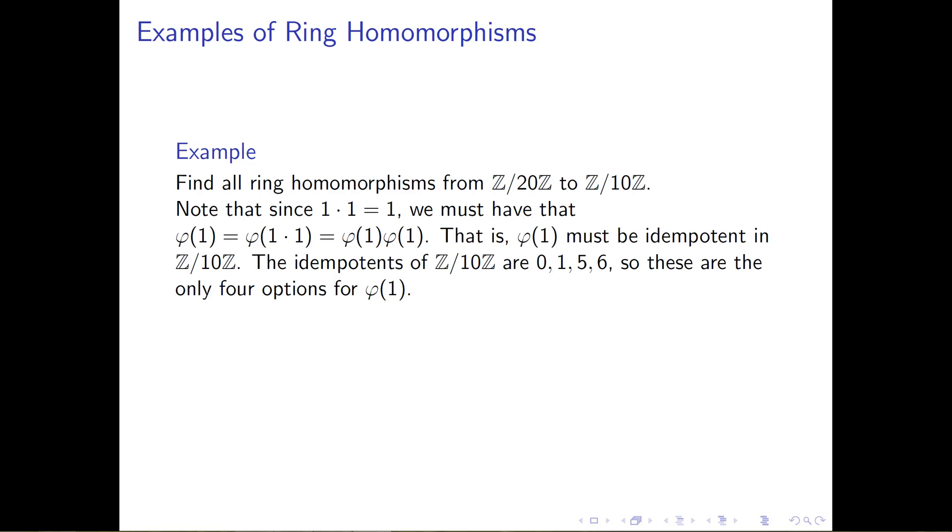So φ of 1 times 1 should be φ of 1 times φ of 1. So putting that all together, we have that φ of 1, that quantity φ of 1 squared, needs to be equal to φ of 1. And this is the very definition of an idempotent element.